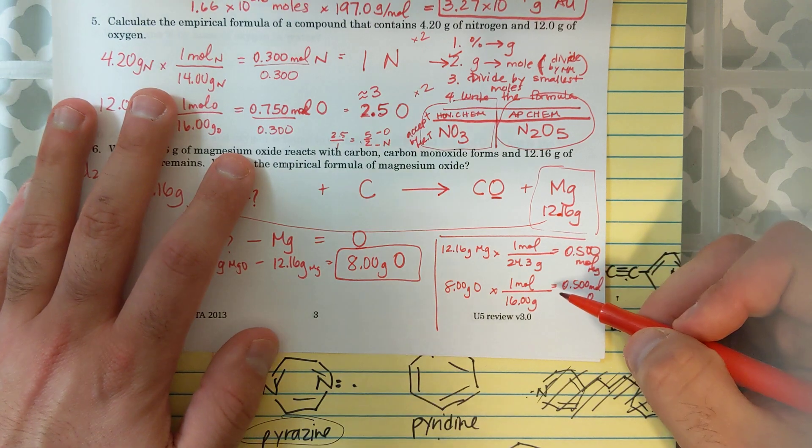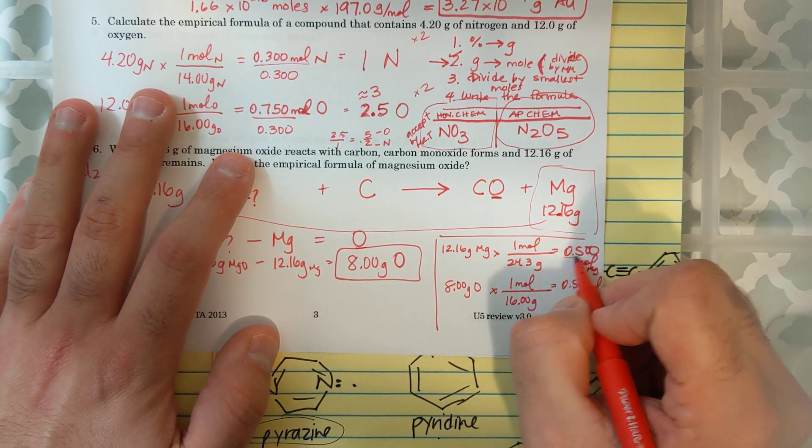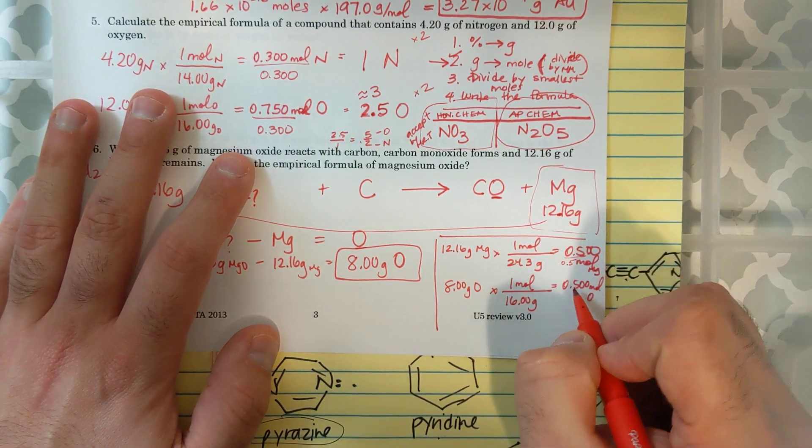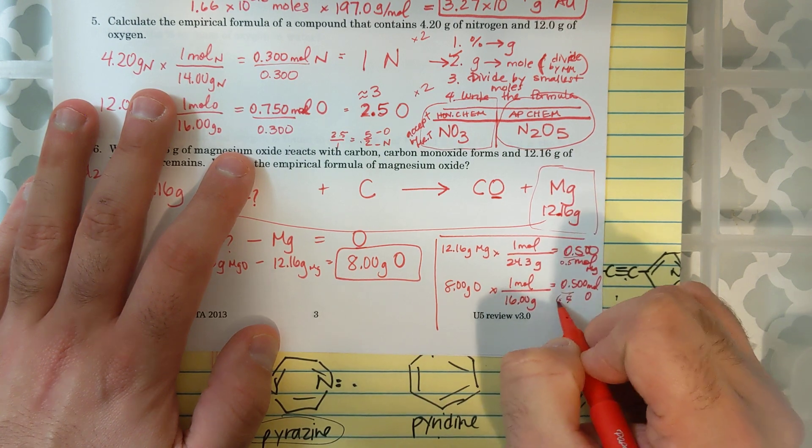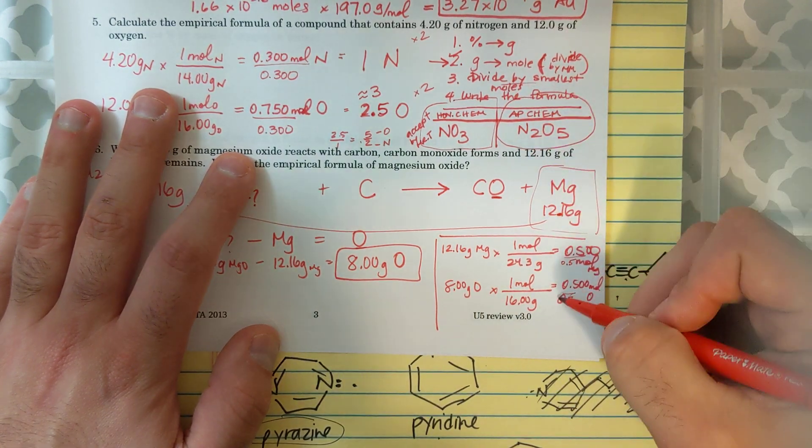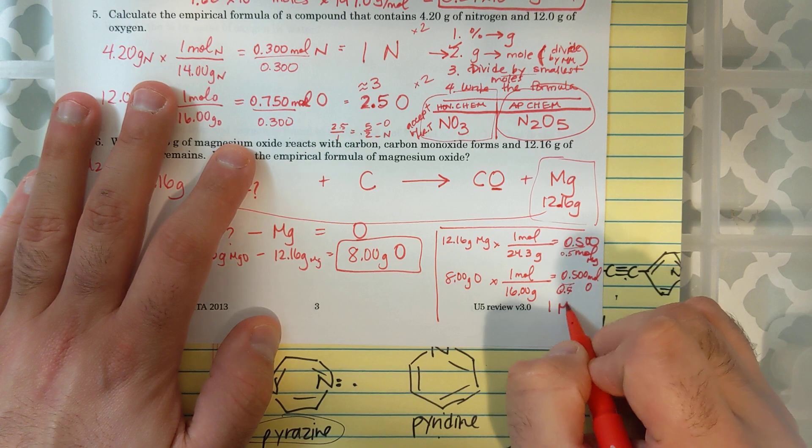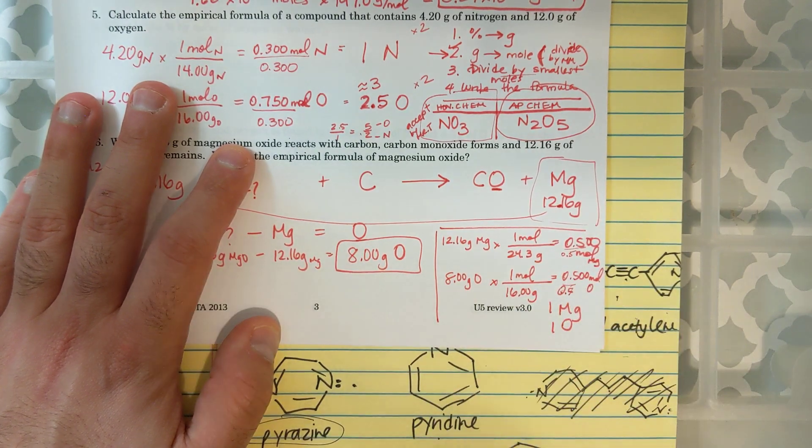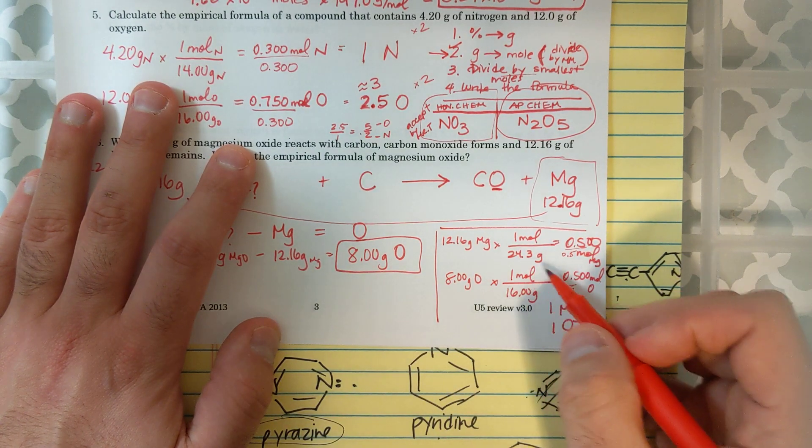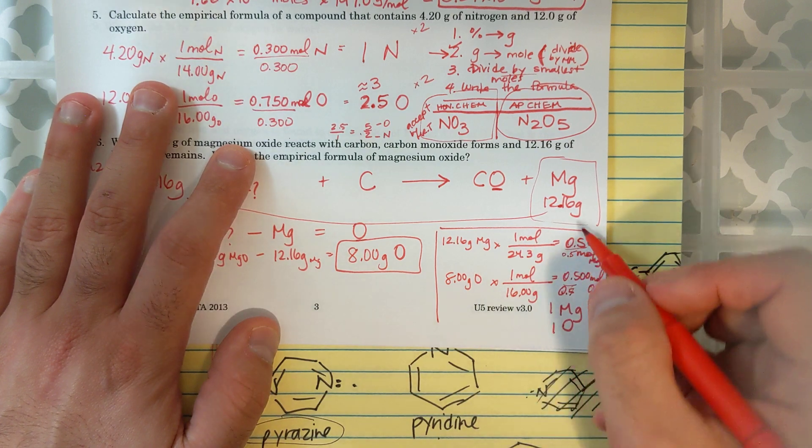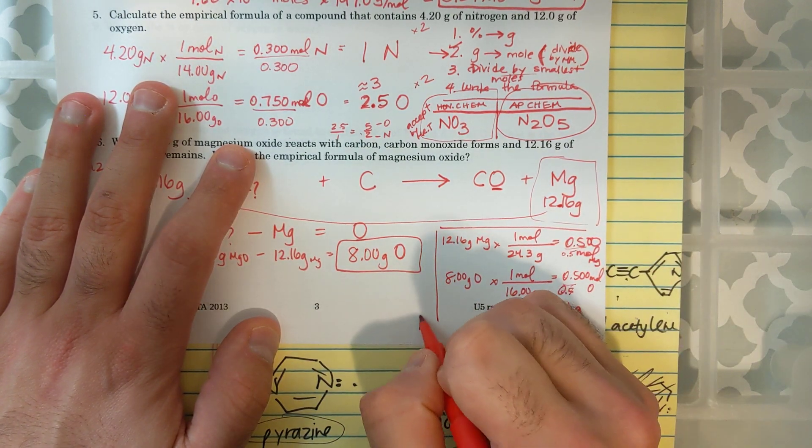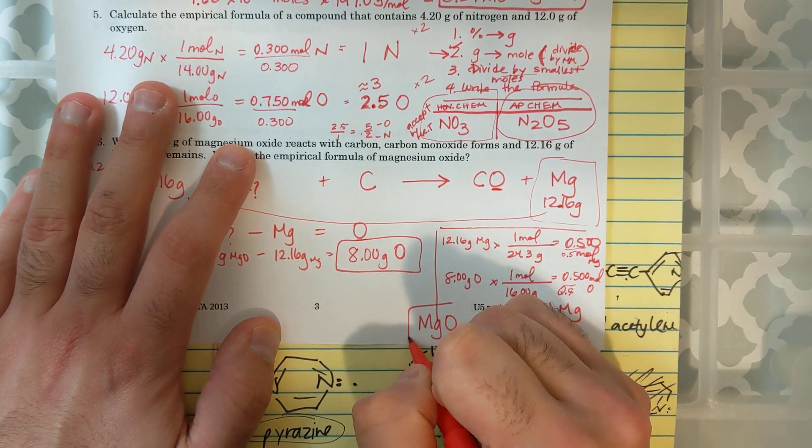If I divide by the smallest number, which is both of them, doesn't matter which one, I'm dividing by 0.5, which is the next step, divide by the smallest moles, I get 1Mg and 1O. So, if I want to write a formula, since they have the same number of moles, the formula is going to be MgO.